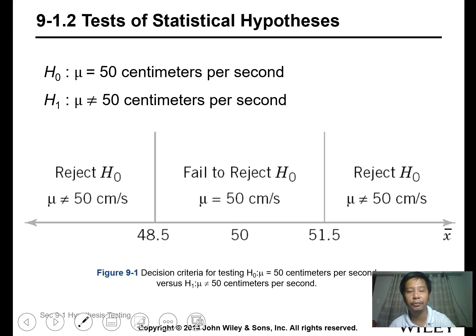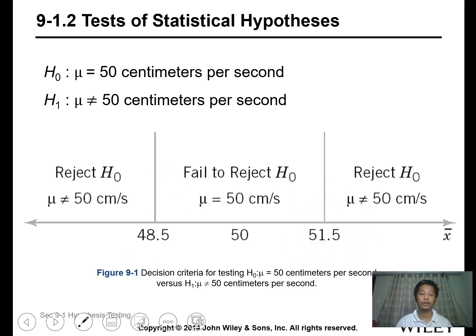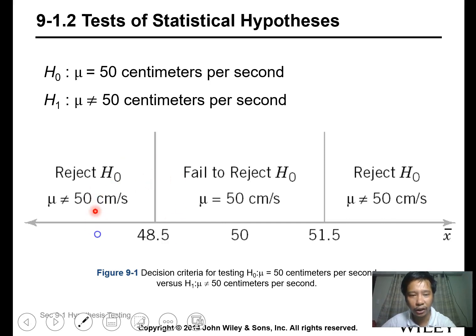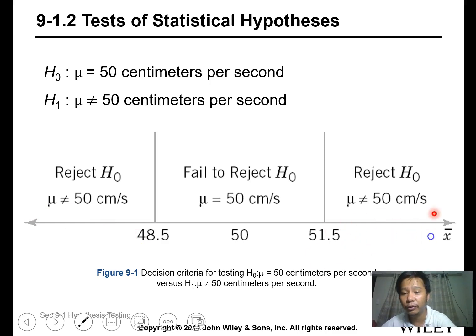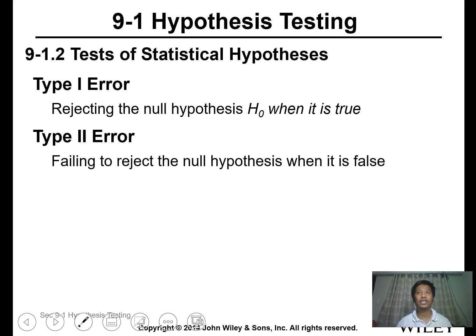For example, we accept the null hypothesis — or fail to reject it — when the value is between 48.5 and 51.5. That is our acceptance range. For rejecting, it's any value beyond 48.5 and 51.5.